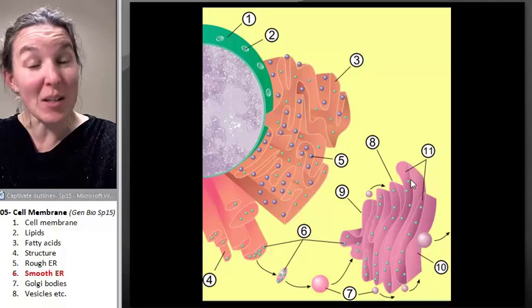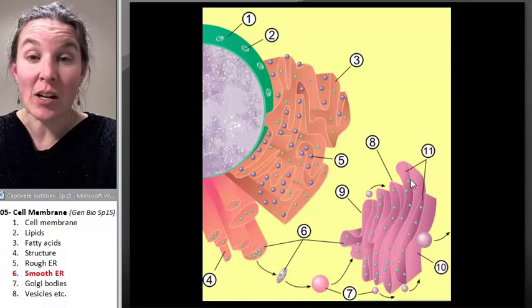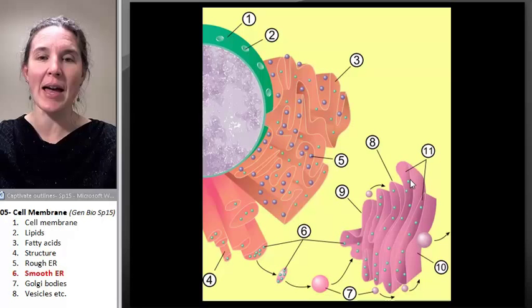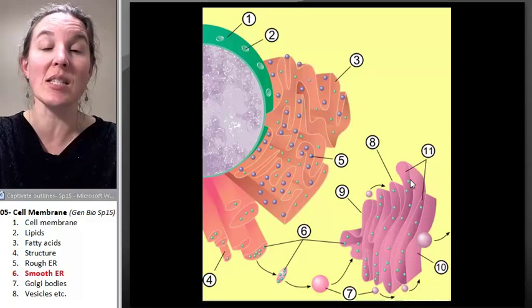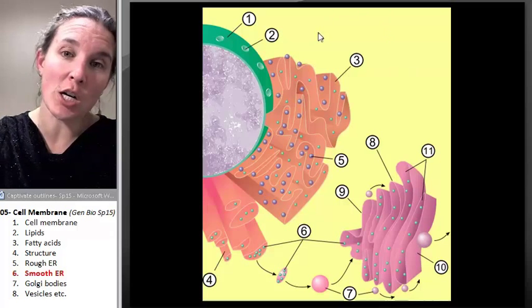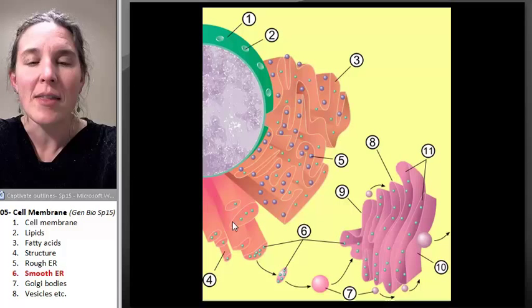Now, the smooth endoplasmic reticulum is also an extension of the nuclear envelope. So take a look at this picture here and where do you think the smooth endoplasmic reticulum is? Right there. And look at it.